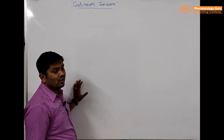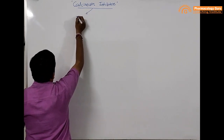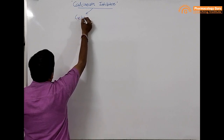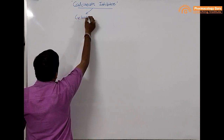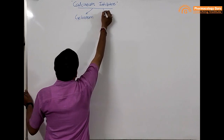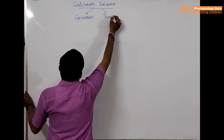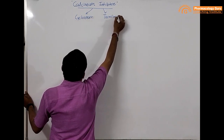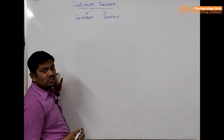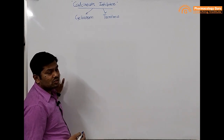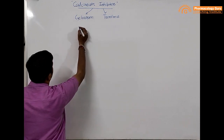We have two drugs in this class: one is cyclosporine and the other is tacrolimus. Both drugs inhibit calcineurin inside the helper T cells.